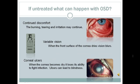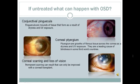If untreated, OSD will lead to continuing discomfort, red eyes, variable vision, and in severe cases, corneal ulcers and loss of vision. If untreated, OSD can lead to pinguicula, which are mounds of tissue that form as a result of dryness and UV exposure. Pterygiums are growths of fibrous tissue across the cornea as a result of dryness and UV exposure — they are a leading cause of blindness in some third world countries. Extreme dry eye can lead to corneal scarring and possible blindness.